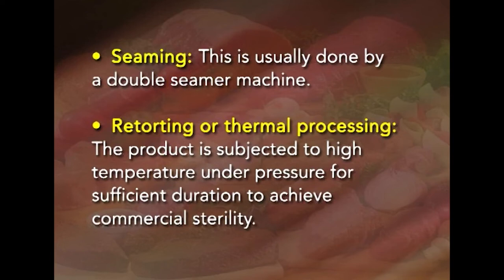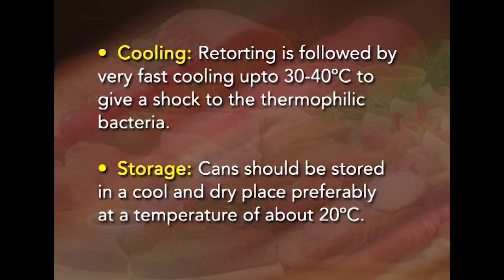The next step is retorting or thermal processing, where the product is subjected to high temperature under pressure for sufficient duration to achieve commercial sterility. After retorting, cooling is a very essential step: very fast cooling to 30 to 40 degrees centigrade is applied to give a shock to thermophilic bacteria. Finally, the cans should be stored in a cool, dry place, preferably at about 20 degrees centigrade.